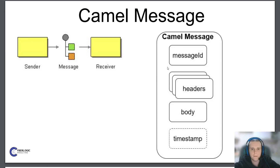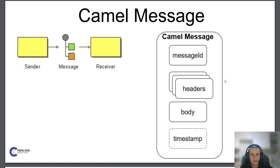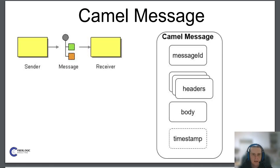A message consists of several parts. The body is the payload of the message — it can be of any type and length and has a type of java.lang.Object. Headers represent additional information attached to the message, typed as java.util.Map of Strings to Objects, where each header has a unique String name and can have any value. The message ID is a message identifier, usually generated by Camel itself.